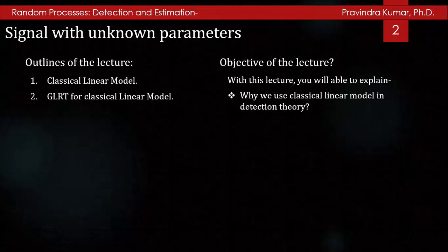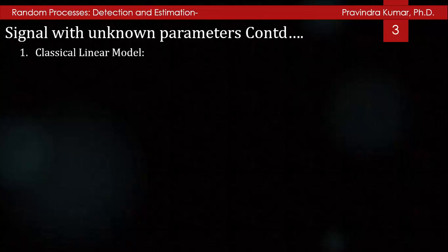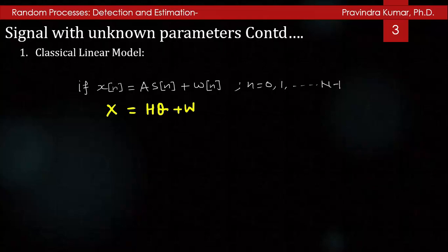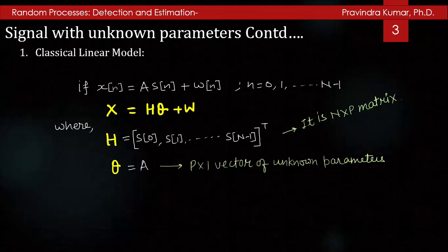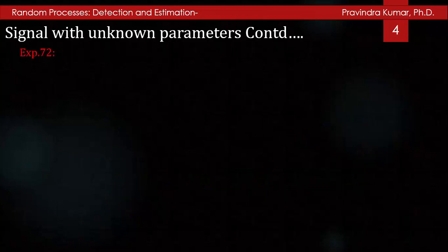The objective of this lecture is that you will be able to explain why we use the classical linear model in detection theory. Let us start with the classical linear model as seen in the previous lecture. If x[n] = A·s[n] + ω[n], where n is 0 to N-1, we can write this in matrix form as x = Hθ + ω, where matrix H is [s₀, s₁, ..., s_{N-1}]^T, known as the N×p observation matrix. θ is the p×1 vector of unknown parameters, equal to A, and ω is Gaussian noise with mean 0 and covariance matrix σ²I — an N×1 random noise vector.